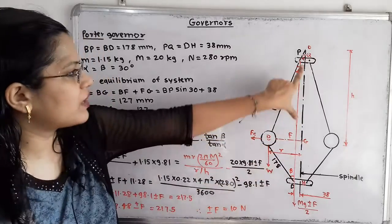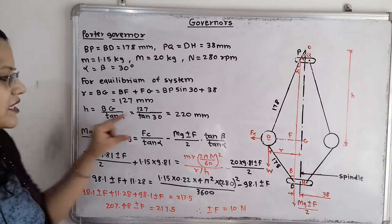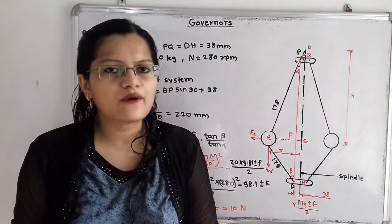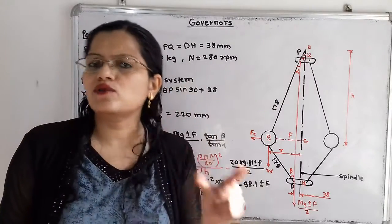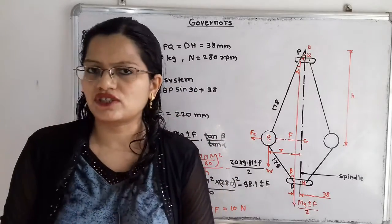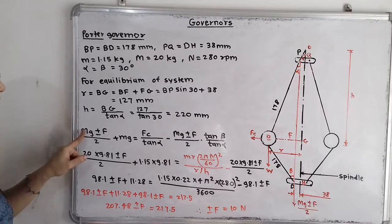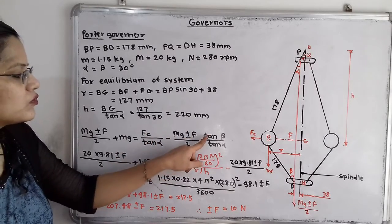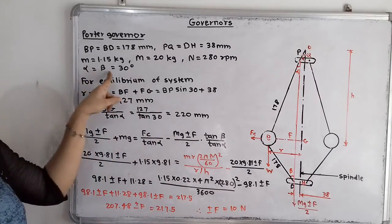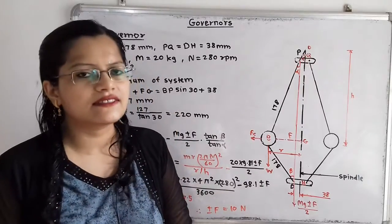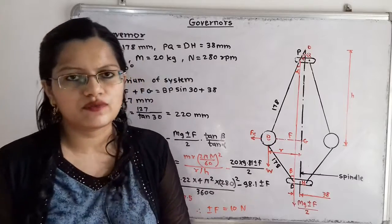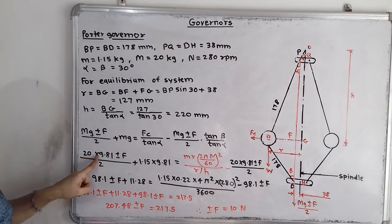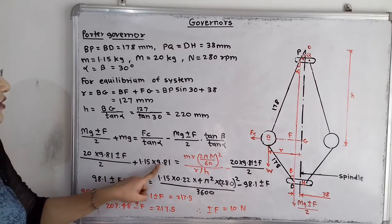Now we will apply the basic formula. When considering frictional force, we add or subtract F from the sleeve weight term. The formula is: Mg ± F/2 + mg = Fc / tan(alpha) − (Mg ± F/2) × tan(beta) / tan(alpha). Since alpha equals beta equals 30 degrees, tan(beta)/tan(alpha) equals 1. Substituting known values: 20 × 9.81 ± F/2 + 1.15 × 9.81 equals the right-hand side.